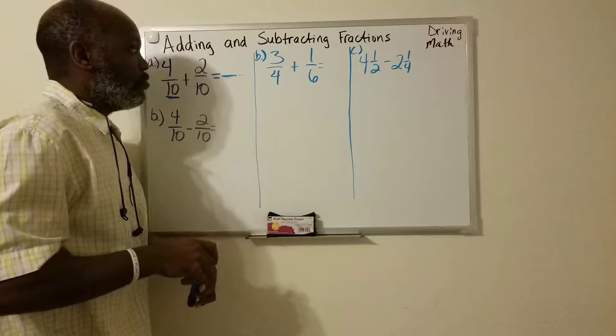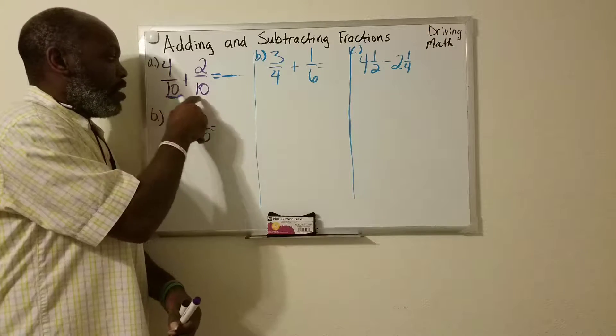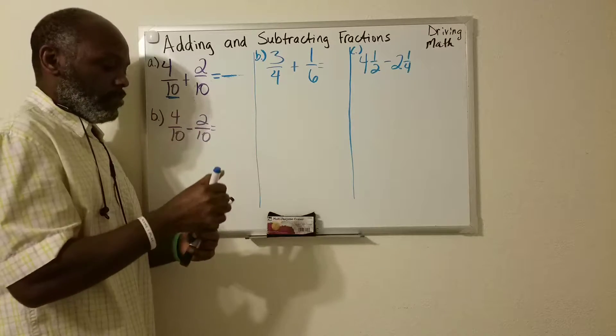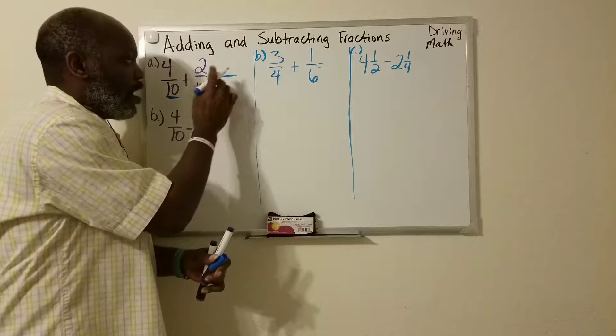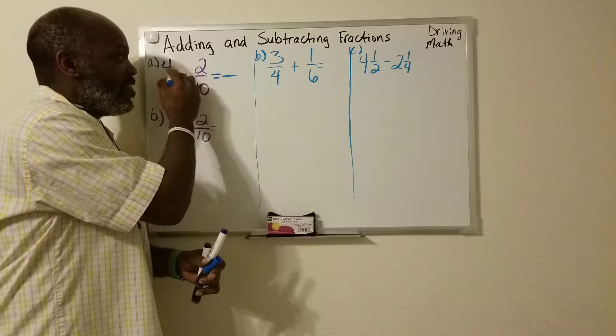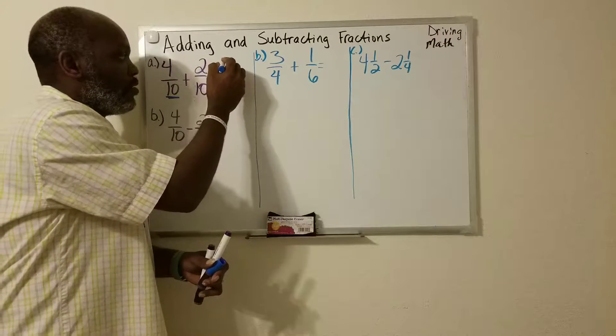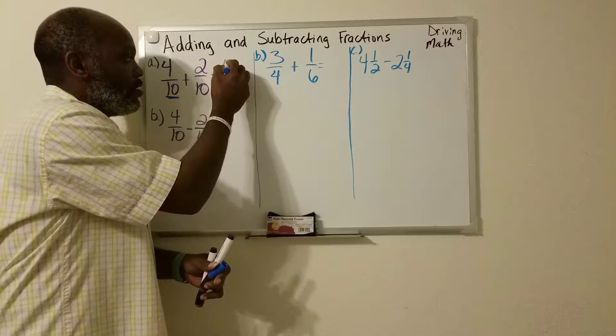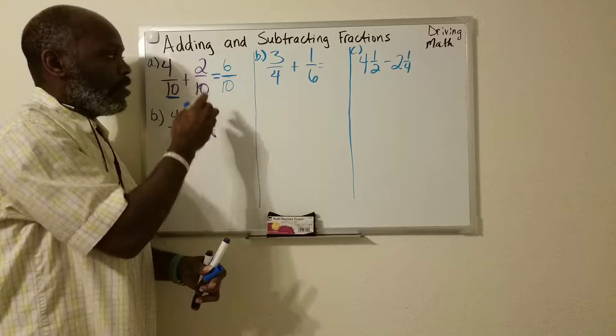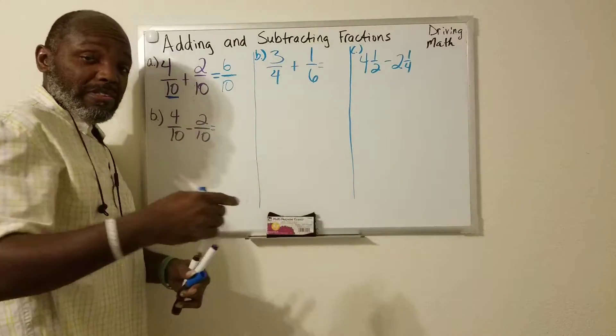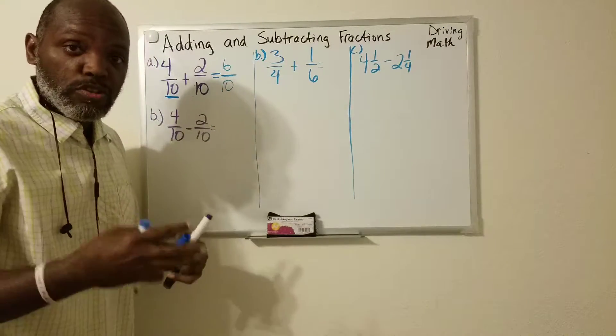The first step is making sure that the denominators are the same. And as you can see, the denominators are the same. So 4 plus 2 is 6. The denominator stays the same. Are we done? Is it in lowest terms, in simplest terms? Has it been reduced? No, it has not.